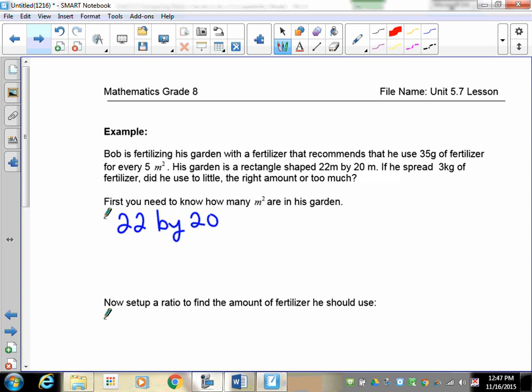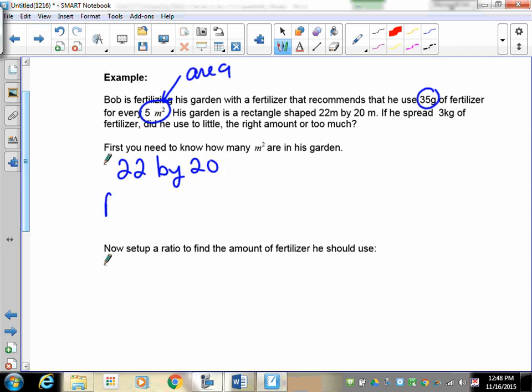And these are in meters. If he spread 3 kilograms of fertilizer, did he use too little, the right amount, or too much? Well first thing you need to know is that he recommends 35 grams of fertilizer for every 5 meters squared. Now this is an area, note the meter squared. So that means that I have to find the area of Bob's garden first. So remember area of a rectangle is length times width. So your area is going to be 22 times 20, that means that your area is going to be 440 square meters.